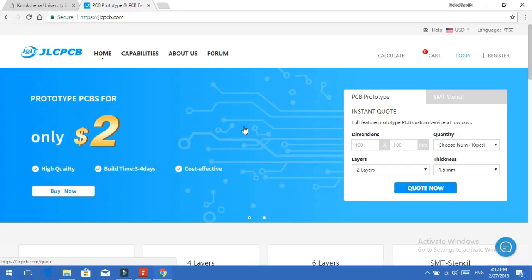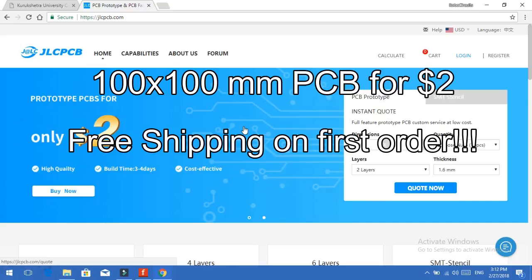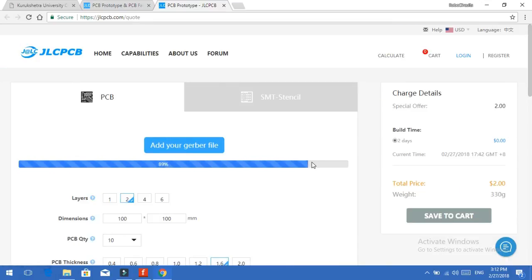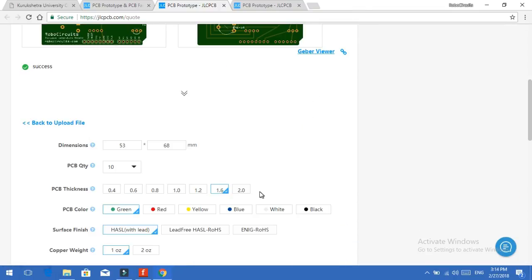You can order a 10 by 10 centimeter board for less than $2 and you will get free shipping on your first order. Just go to JLCPCB.com, click on quote now, upload your Gerber files. Your dimensions will be automatically filled. Just select your color and check out securely.